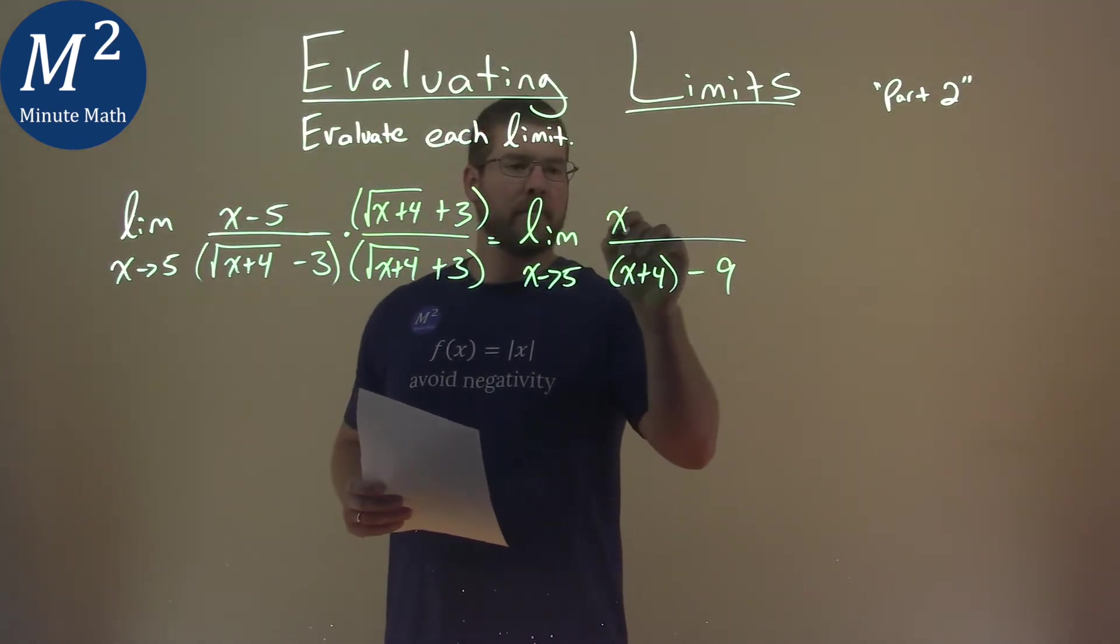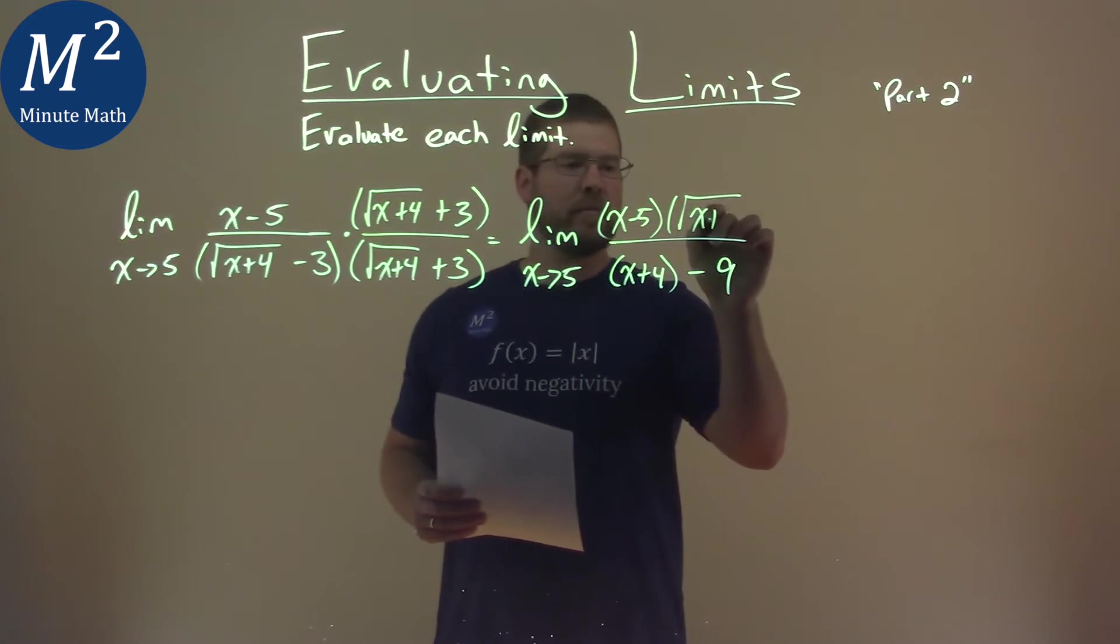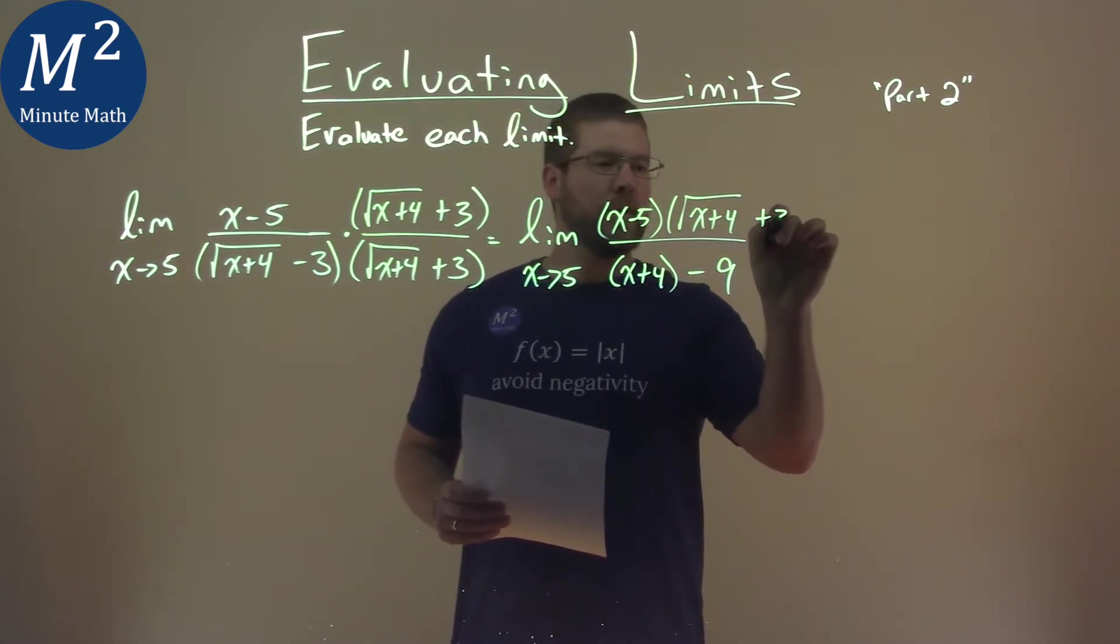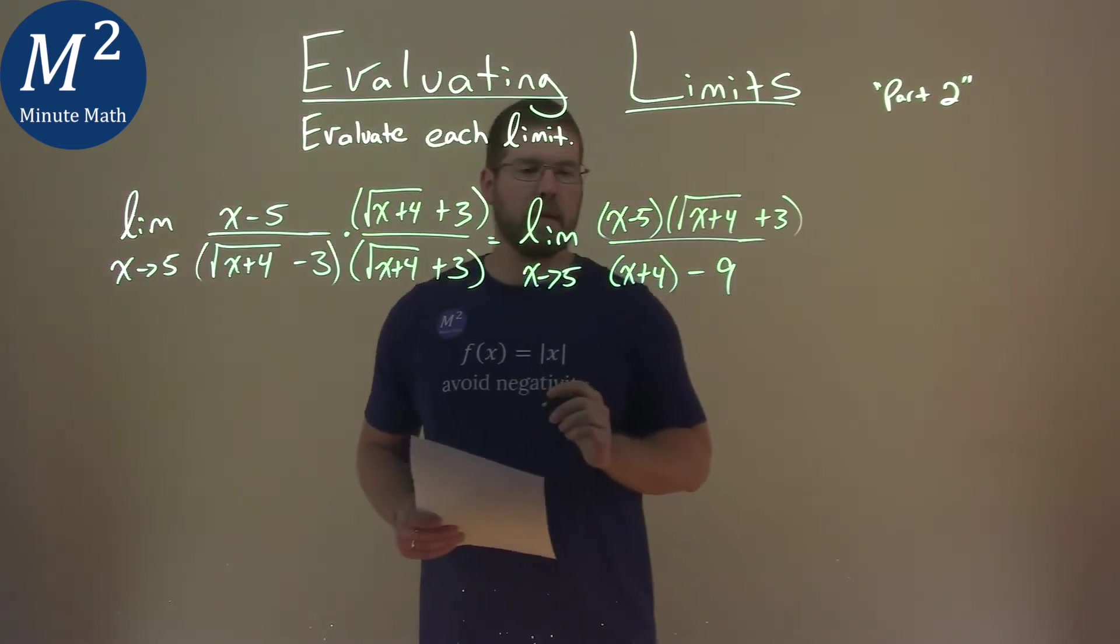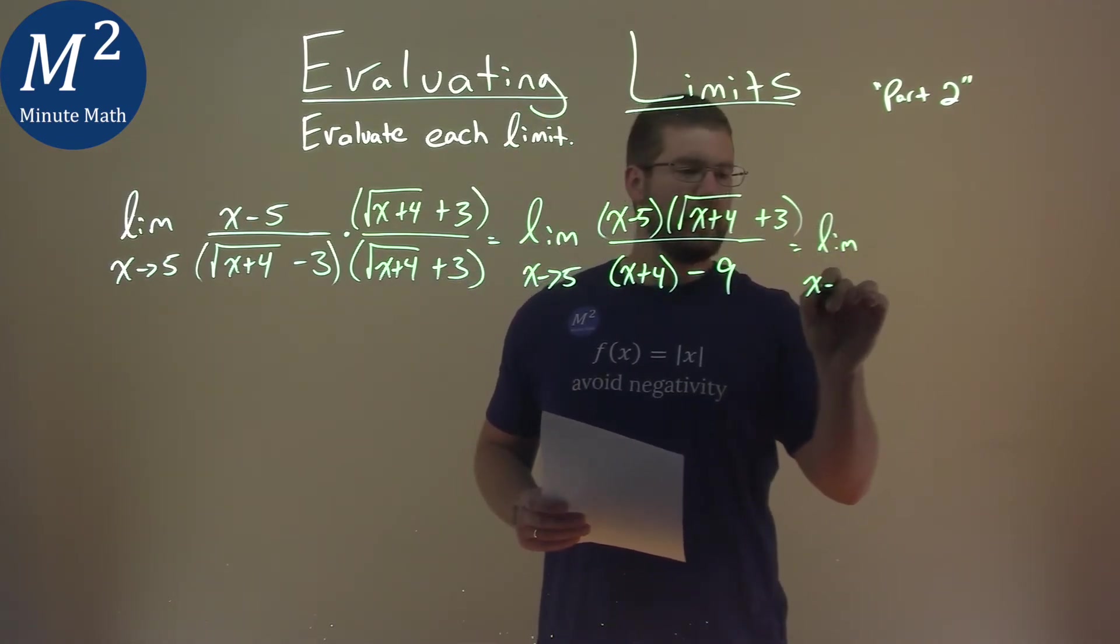In the numerator, we still have that x minus 5. I'm going to leave it like this, times the square root of x plus 4 plus 3. Let's keep writing this out. The limit here, as x approaches 5,